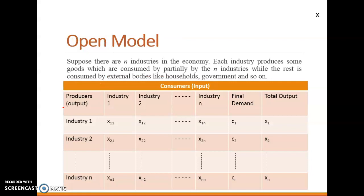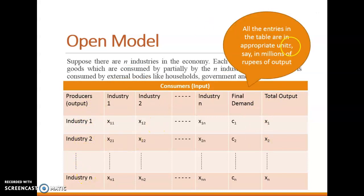In the open model there are N industries — industry 1, industry 2, up to industry N — and each industry produces goods that are partially consumed by these N industries while the rest is consumed by external bodies like households and governments. Under this model we have formulated a table where the columns represent industries 1, 2 up to N, along with a final demand column and total output column, with rows also representing industries 1 through N. All entries in the table are in appropriate units, such as millions of rupees of output, and all entries use the same units.